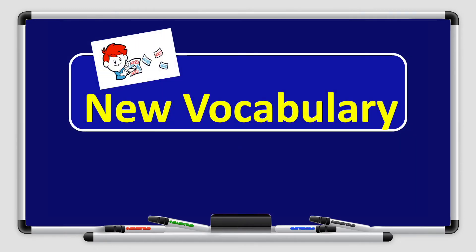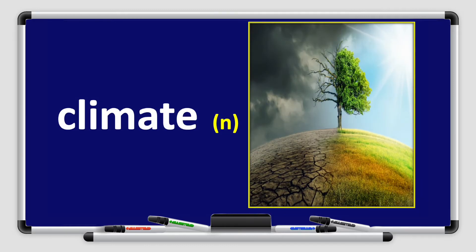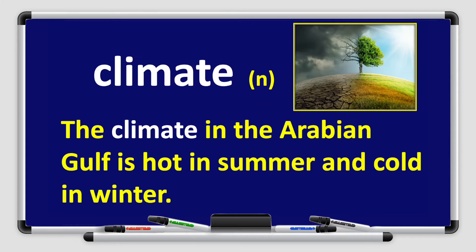Now let's move on to the next part: the new vocabulary. Take a close look at the picture. Climate — it is a noun. The climate in the Arabian Gulf is hot in summer and cold in winter.